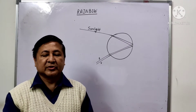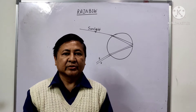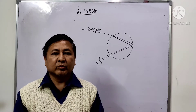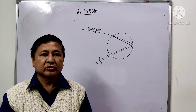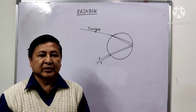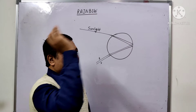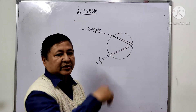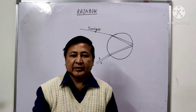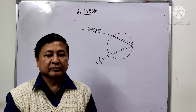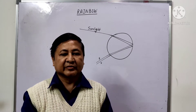Dispersion is the splitting of white light into seven colors. A rainbow is always formed in a direction opposite to that of the sun. That means the sun should always be on your back side and the rainbow will be seen in the front.